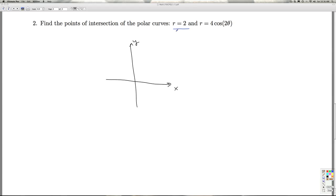So r equals 2. Well, r is 2, theta can be whatever it wants. So that's going to be a circle centered at the origin with a radius of 2. So that's r equals 2.